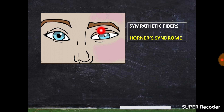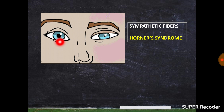In the figure you will see that ipsilaterally — because the lesion was on the left side — the left eye shows ptosis and miosis. Comparing to the right eye, the left pupil is miotic. Other features may include anhydrosis and loss of the ciliospinal reflex.